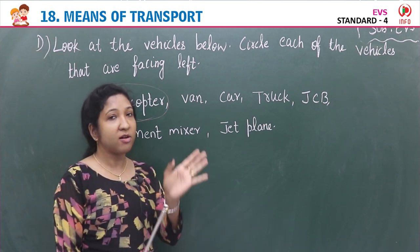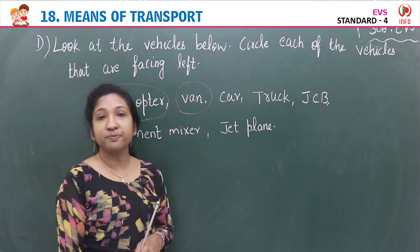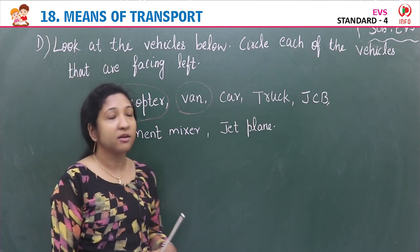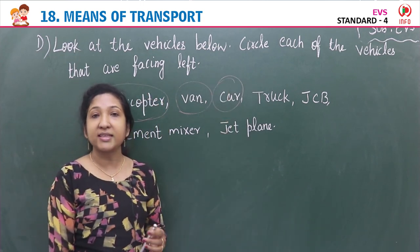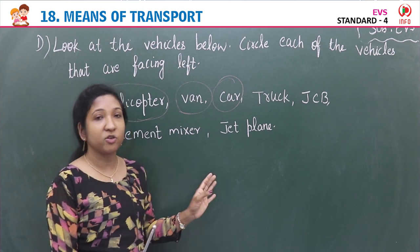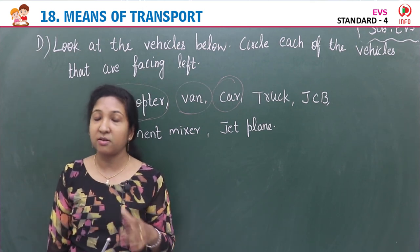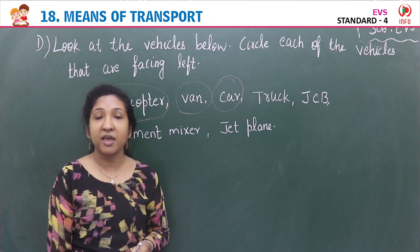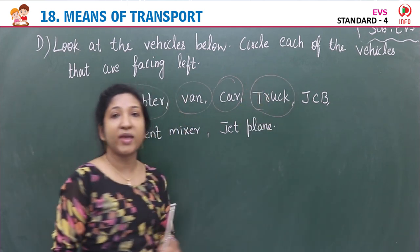Third is a van — it is also facing left, so circle it. Next is another car facing completely left — circle it. Then there is an aeroplane facing right, so don't circle it. Next is a jeep facing right — don't circle it. Then a truck facing left — circle it. JCB is also facing left — circle it. JCB is used for demolition, construction, truck loading and unloading.